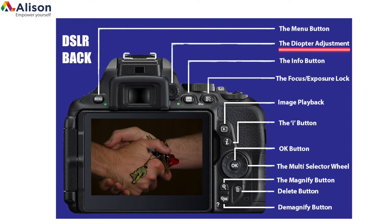My first camera, I remember being really confused when everything looked out of focus when I looked into the eyepiece, even when autofocus was turned on. Of course, the issue was with the diopter adjustment and not the lens. If you play around with it, you'll see the image in the viewfinder becoming sharp.